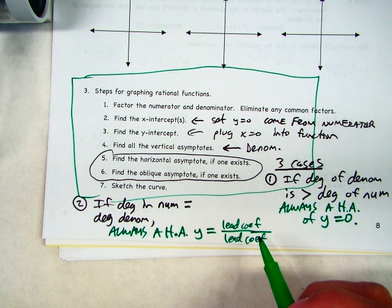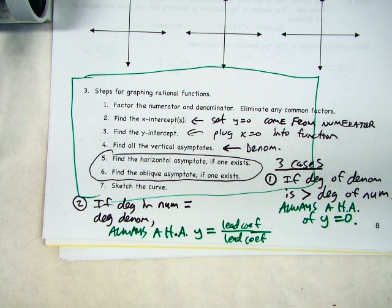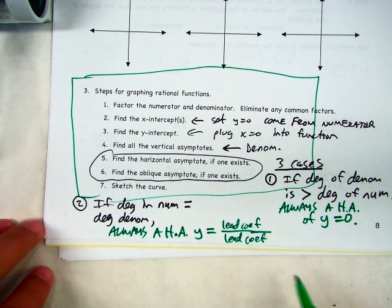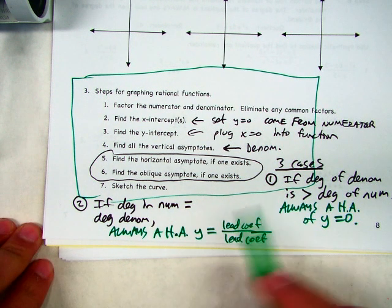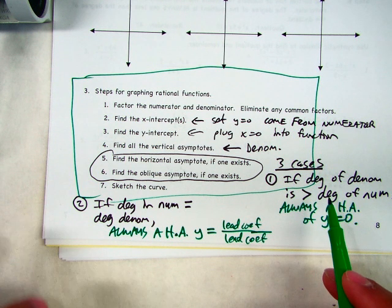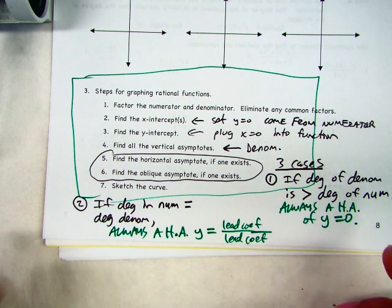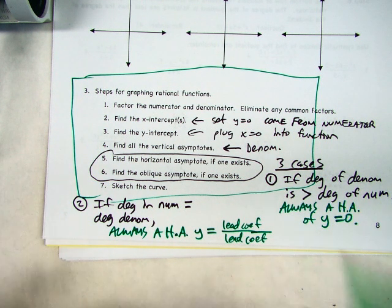So if it was like 3x squared plus blah blah blah over 2x squared plus blah blah blah, then it would be 3 over 2 as the equation for the horizontal asymptote. It's not just about memorizing these things — you should kind of understand why this stuff actually works.